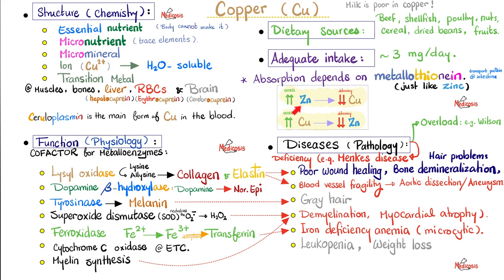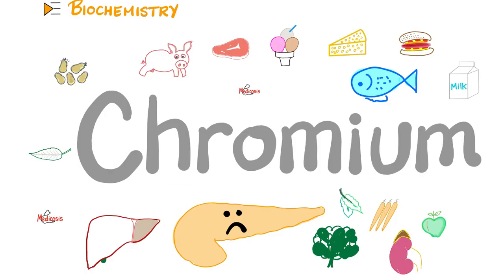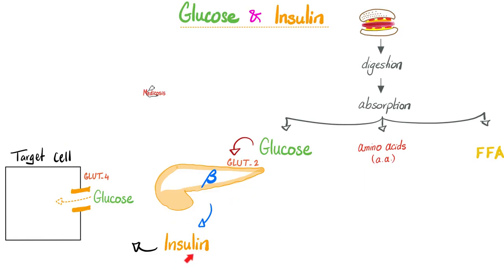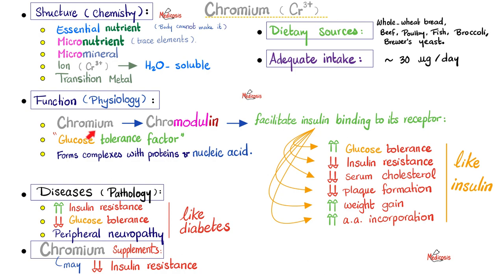One cause of copper deficiency is zinc excess. Next, chromium, also known as glucose tolerance factor. Without chromium, insulin resistance increases, glucose tolerance decreases, and you get peripheral neuropathy — just like a diabetic — because chromium is pro-insulin. It facilitates the action of insulin on its receptor on target cells such as skeletal muscle or adipose tissue. Chromium achieves this through chromodulin, a protein that modulates chromium to facilitate insulin binding to its receptor, producing all the actions of insulin. Without chromium, you get diabetes-like symptoms.